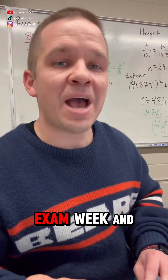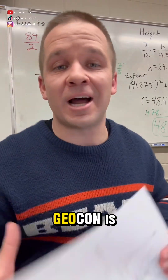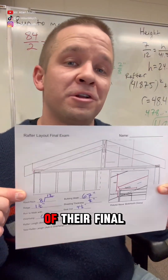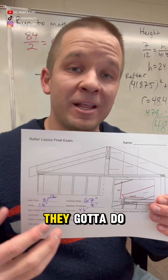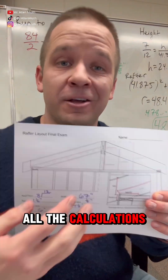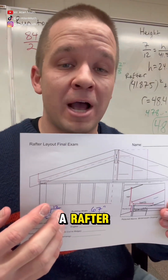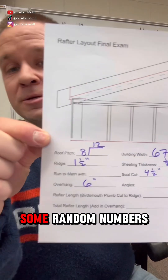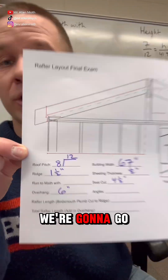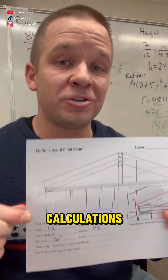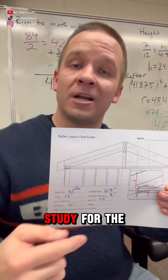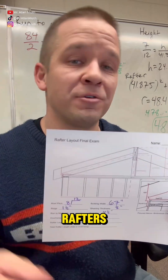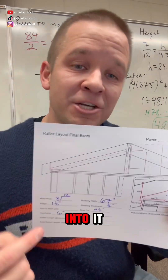It is final exam week and Geocon is going to be mathing up some rafters as a portion of their final exam. For the math component, they have to do all the calculations that go into a rafter, and for construction they have to lay it out. I put some random numbers on here and we're going to go through all the calculations to help them study for their tests. Let's get into it.